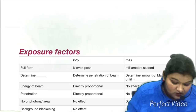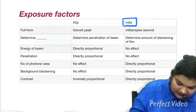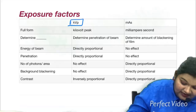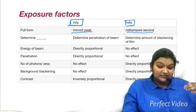Now let us move towards the exposure factors. There are two types: KVP and MAS. KVP stands for kilovoltage peak and MAS stands for milliampere-seconds. Let us see the characteristics that KVP and MAS affect.